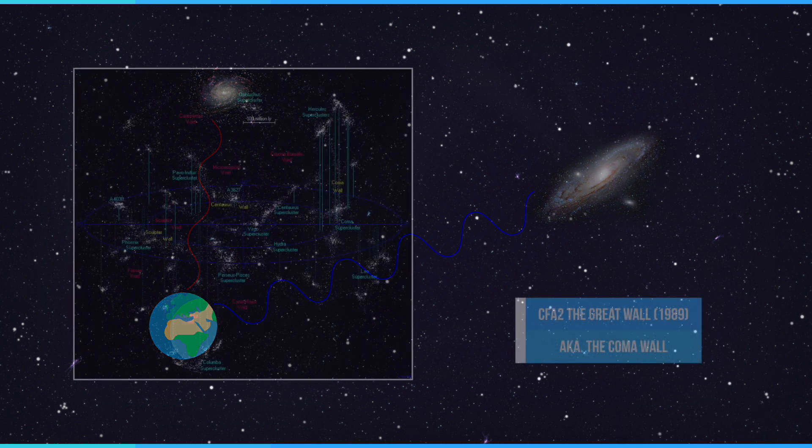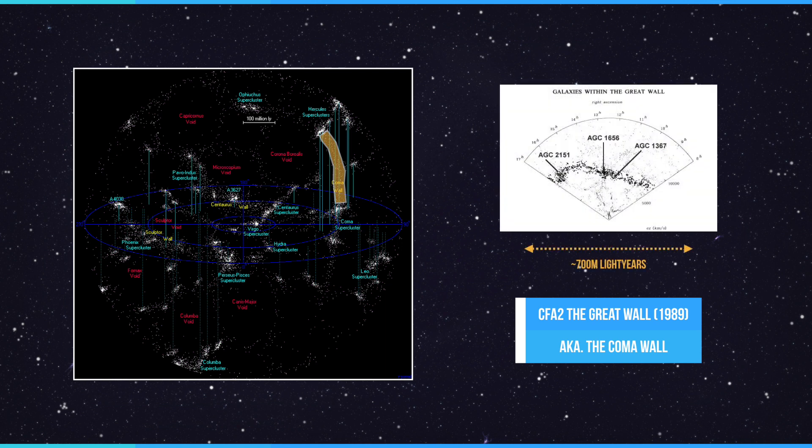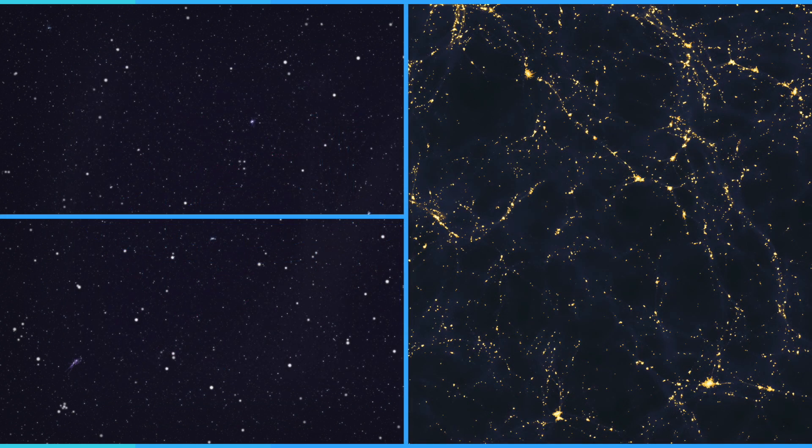One of the first galaxy structures detected was the Great Wall. This is a sheet of galaxies that is hundreds of millions of light years thick. Since then better telescopes and instruments have revealed vast areas of the cosmic web. There are many types of galaxies.